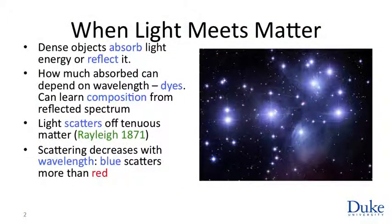And the first thing we want to consider are the possibilities for what happens when light meets matter. So we talked about dense objects like the earth. When light hits the earth, most of the light is absorbed.